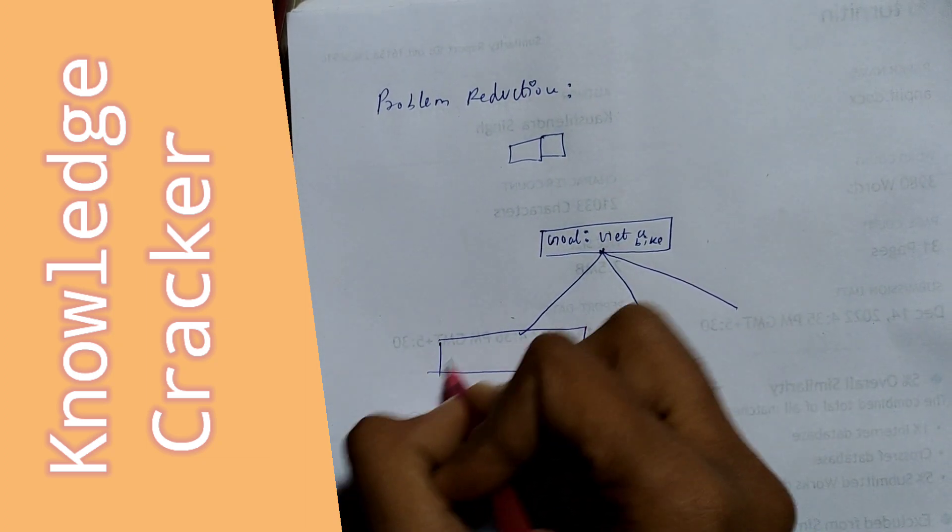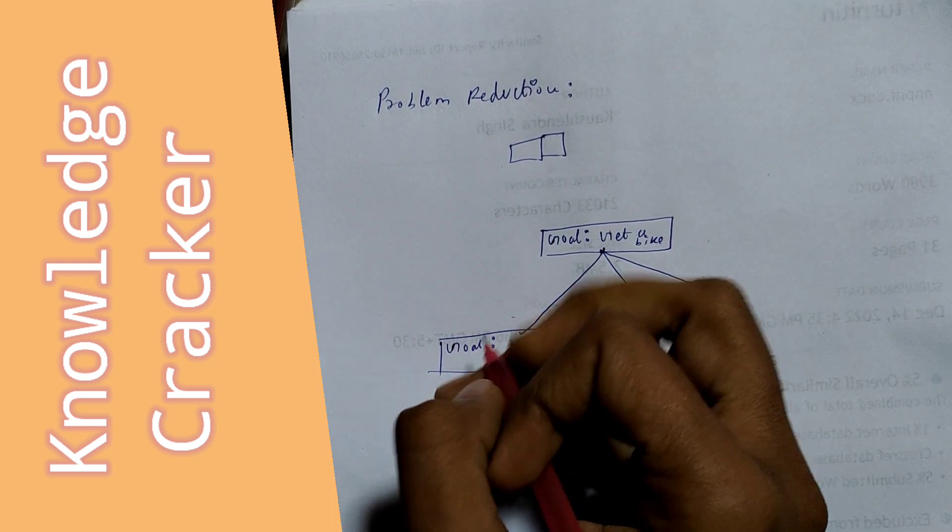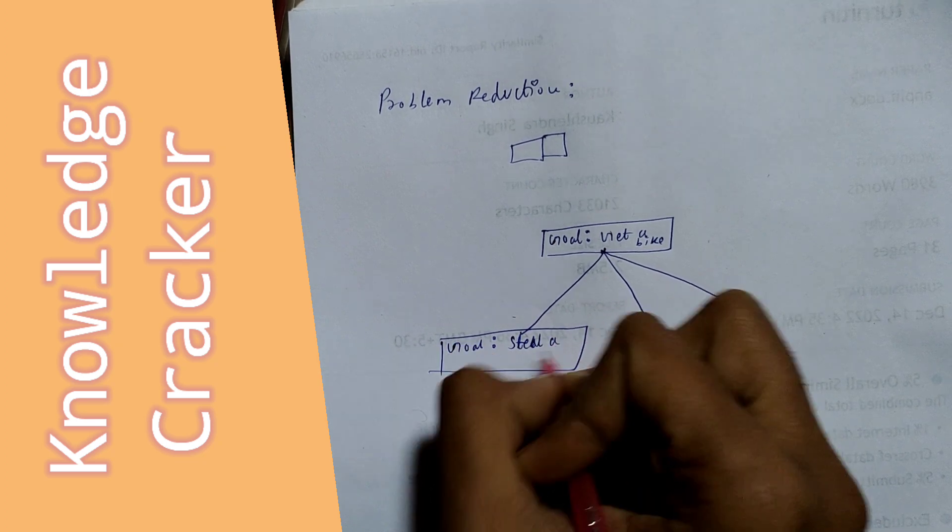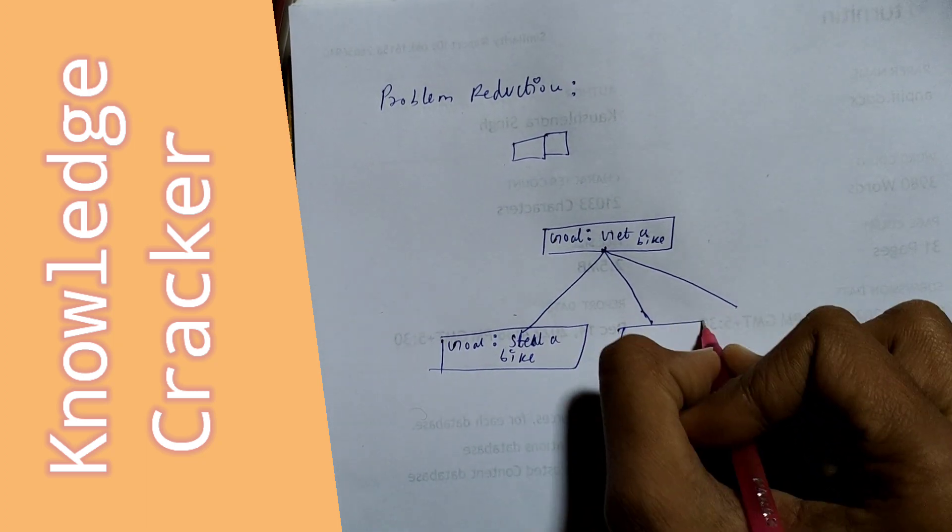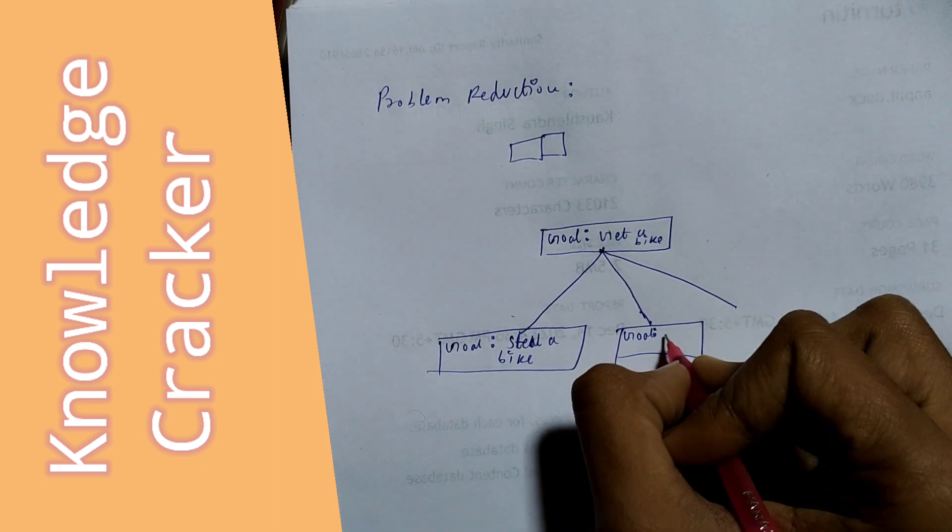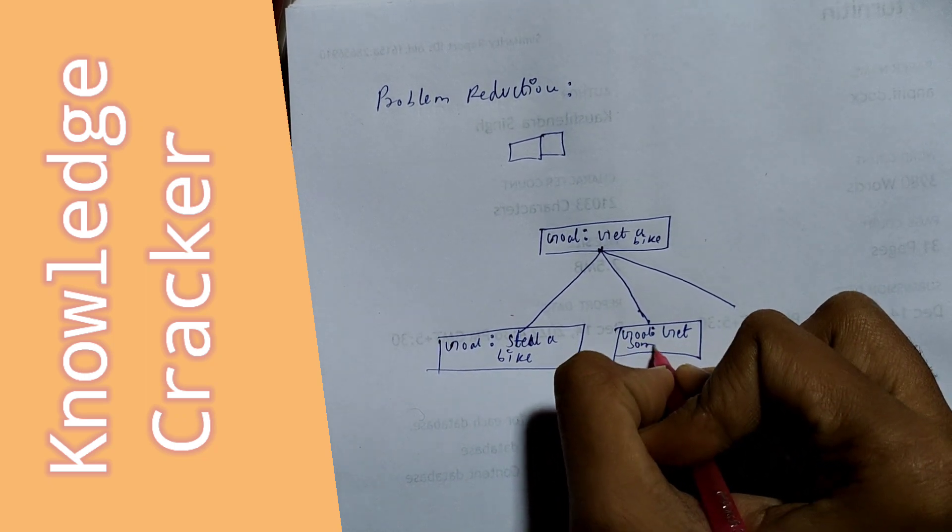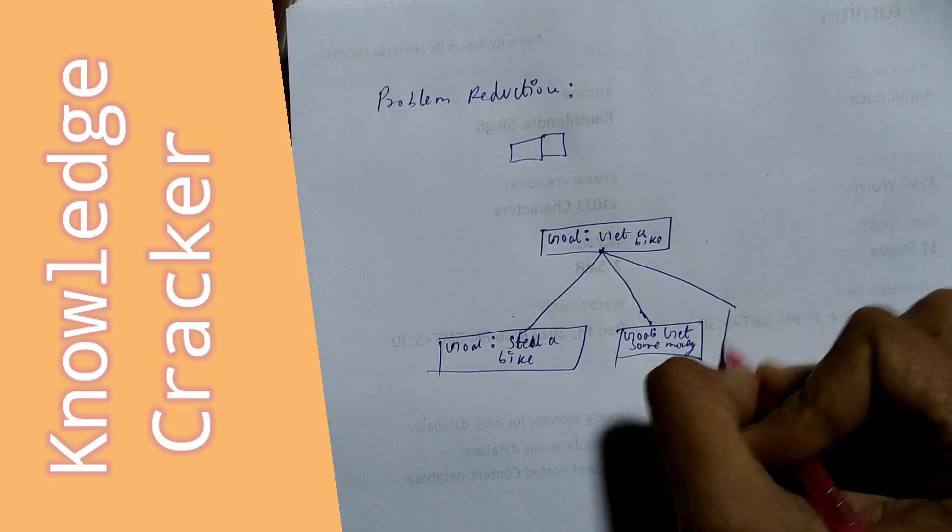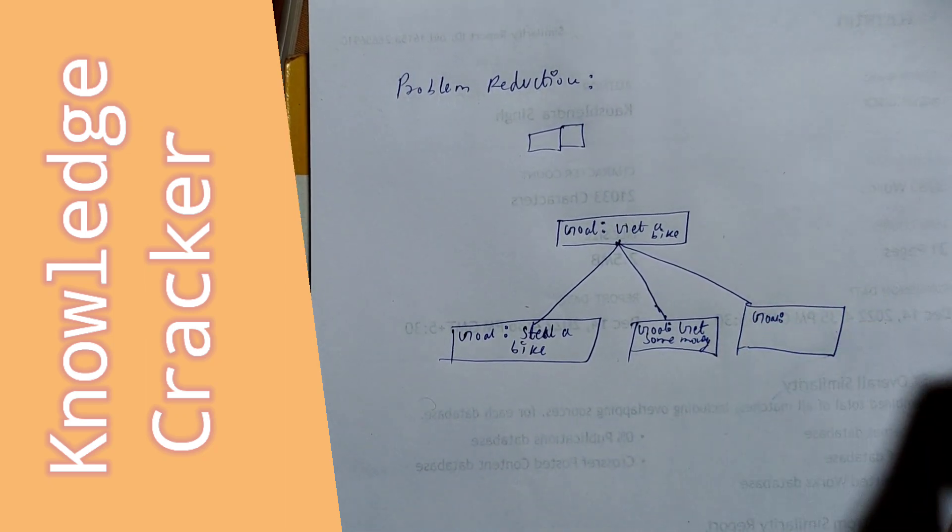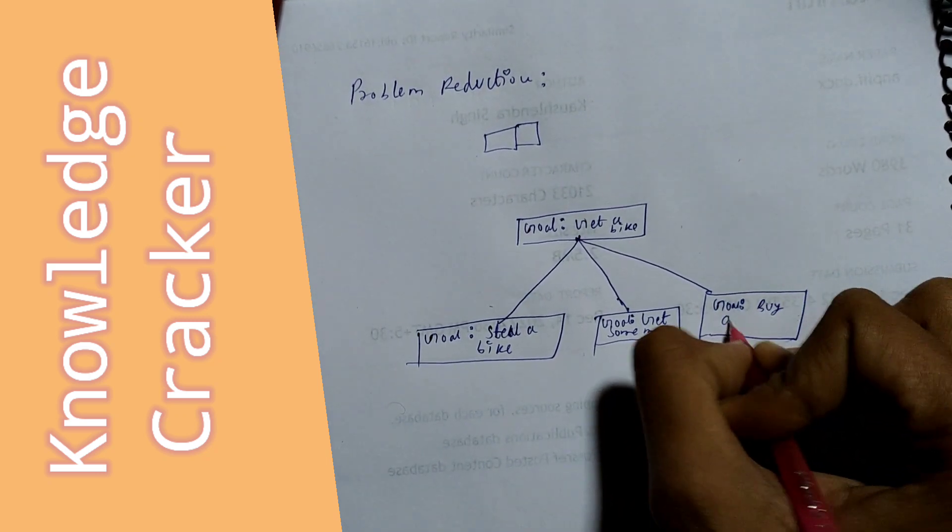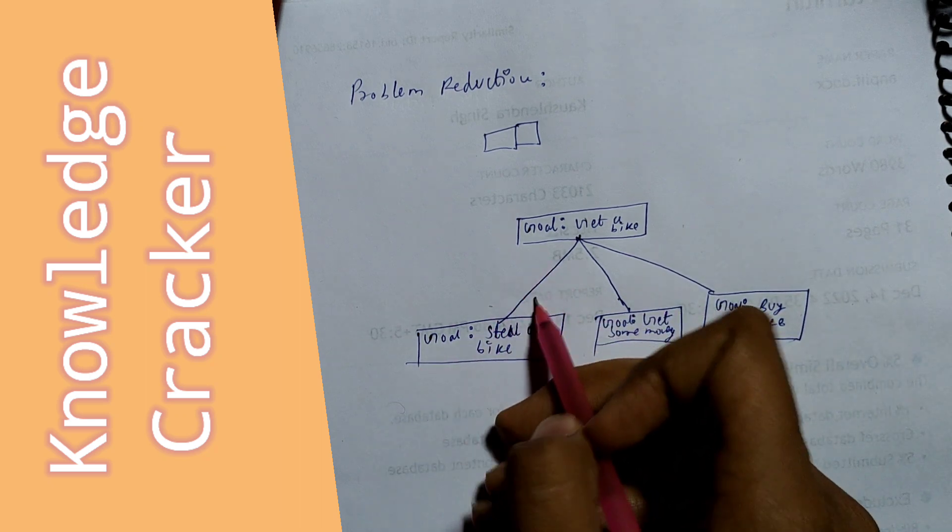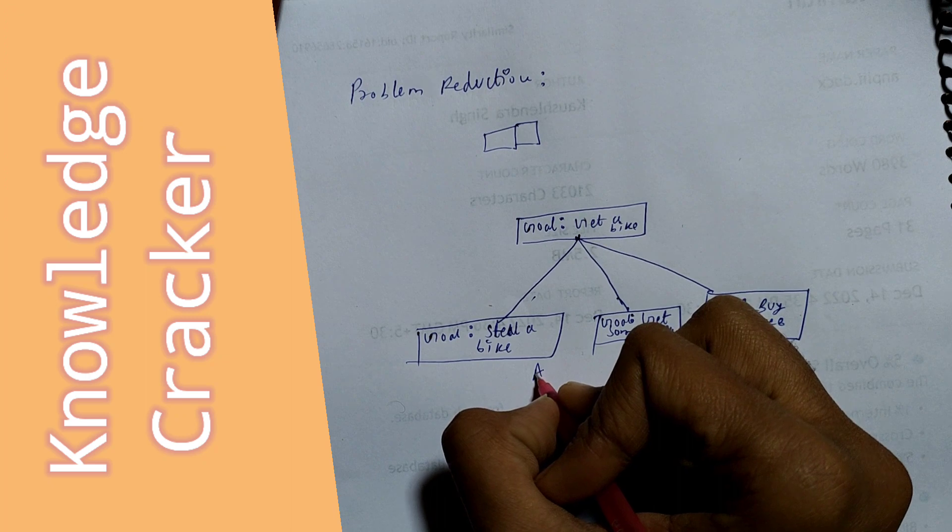First goal is steal a bike, second goal is get some money, and third goal is buy a bike. So what we will do, we will not steal the bike. This makes the OR.